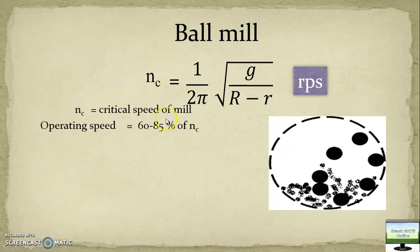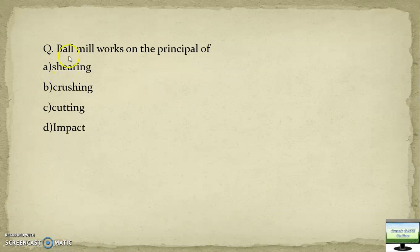Please remember this formula gives critical speed value in revolution per second, not in minute. To convert into minute, you need to multiply by 60. As I explained, operational speed is less than the critical speed, generally 60 to 85 percent.